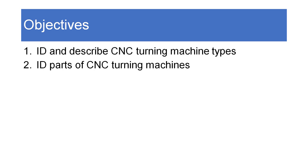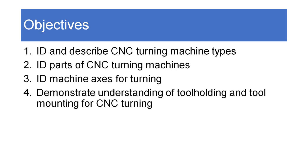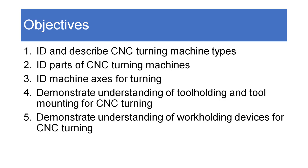Additional objectives include identifying the parts of a CNC turning machine, identifying the machine axes used for turning, demonstrating an understanding of how tools are held and mounted for CNC turning, and discussing the different work holding devices used in CNC turning.